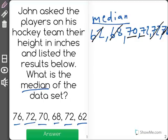Now when you have two numbers in the middle, what you need to do is find the number that will go in between them. So we have 70 and 72, in between those two numbers is the number 71. That is the average of the two, that is the median.